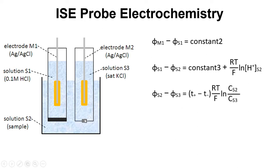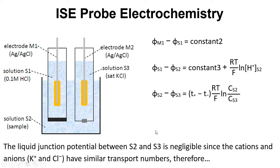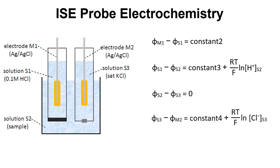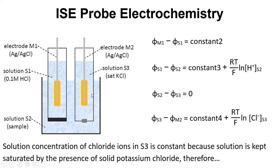The potential difference over the liquid junction is given by its equation, but we note that the liquid junction potential is minimal because we're using an anion and cation pair with very similar transport numbers, so we can set it to zero. Finally, the potential difference between the reference metal wire and its solution equals a constant plus RT over F times the log of the chloride ion concentration. The chloride ion concentration in the reference solution is kept fixed because it's saturated — maintained by the addition of solid potassium chloride — so this overall becomes a fixed constant, which we call constant 5.